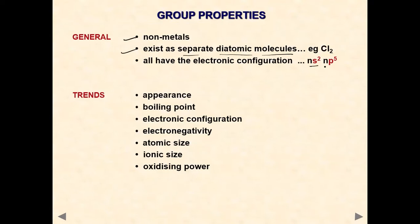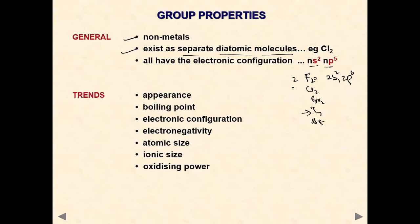Non-metals exist as separate diatomic molecules like Cl2. All halogens have the electronic configuration ns2 np5, where n is the principal quantum number corresponding to the period. For fluorine in period 2, the configuration is 2s2 2p5. For iodine in period 5, the configuration is 5s2 5p5.